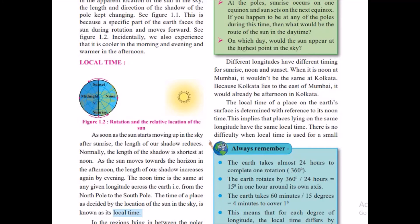Now, difference of longitude, please remember, difference of longitude have different timings from sunrise to noon and sunset. When there is noon at Mumbai, it would not be the same at Kolkata, because Kolkata lies in the east of Mumbai. It would have already been afternoon in Kolkata.